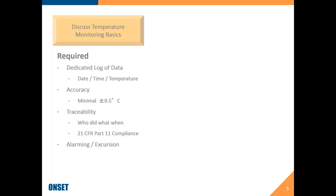The second thing is accuracy. We start with a minimum accuracy of plus or minus 0.5 degrees C — that comes from USP guidance document 1118, but this is really a core tenet of any data logger in the market. If you're working with something that doesn't have this accuracy level, then you're looking at something that's not designed or robust enough for the laboratory environment.